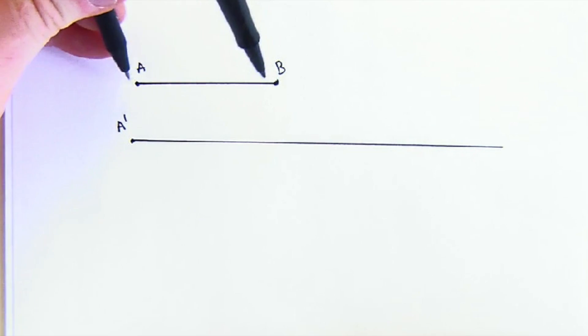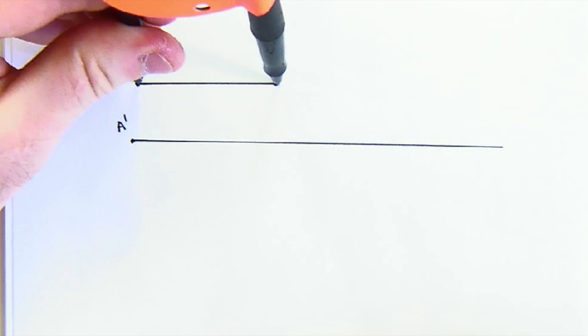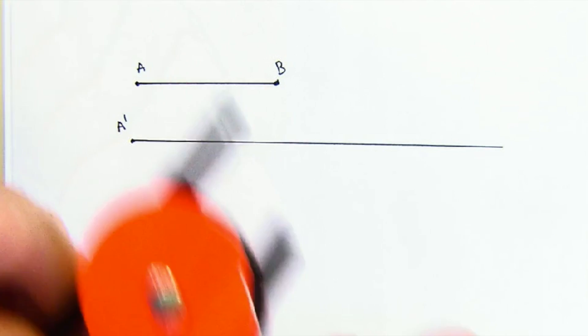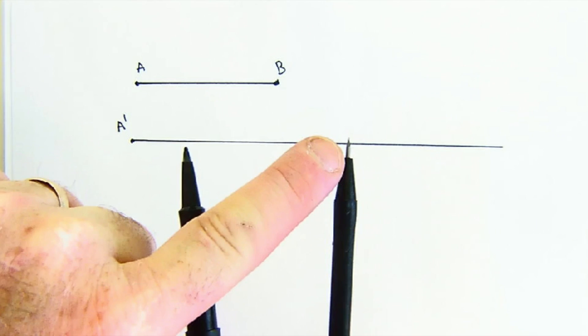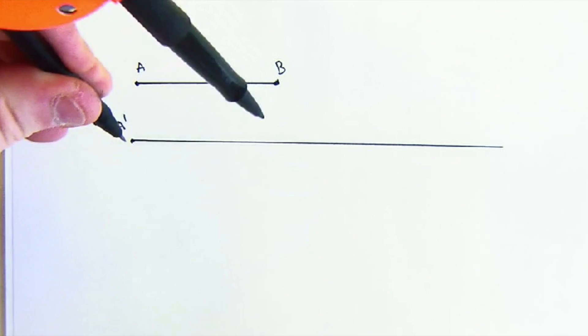Now measuring in this world is with a compass quite uniquely. The beauty of that is I don't know exactly how big AB is, but I know it's exactly that distance.